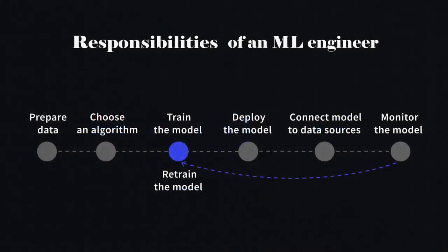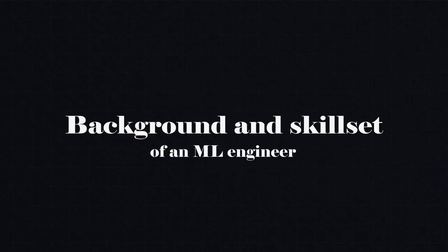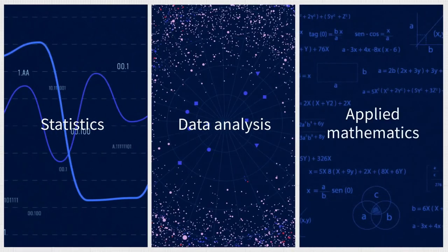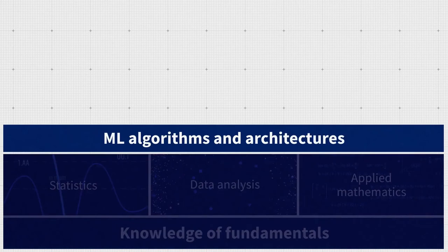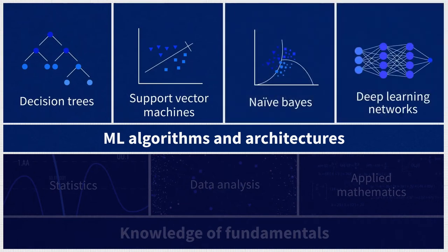As you can see, the ML engineer is generally responsible for the whole machine learning part of the product, from data analysis to the moment the model is trained and launched in production. The typical skill set includes statistics, data analysis, and applied mathematics. ML engineers must also know existing machine learning algorithms and common architectures — decision trees, support vector machines, Naive Bayes, and deep learning networks are a few popular algorithms used in ML applications.